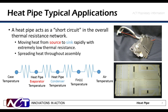A heat pipe acts as a short circuit in the overall thermal resistance network. Heat pipes are especially good at moving heat from your source to a sink very rapidly with extremely low thermal resistances. As shown in the top right image, that's an example of a heat pipe being used to spread heat from the hot side of a TEC. And in the lower right image, heat pipes are embedded in conduction plates to spread heat uniformly throughout the assembly.